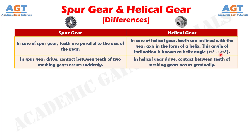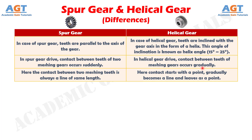Difference number 2: In spur gear drive, contact between teeth of two meshing gears occurs suddenly, whereas in helical gear drive, contact between teeth of meshing gears occurs gradually.